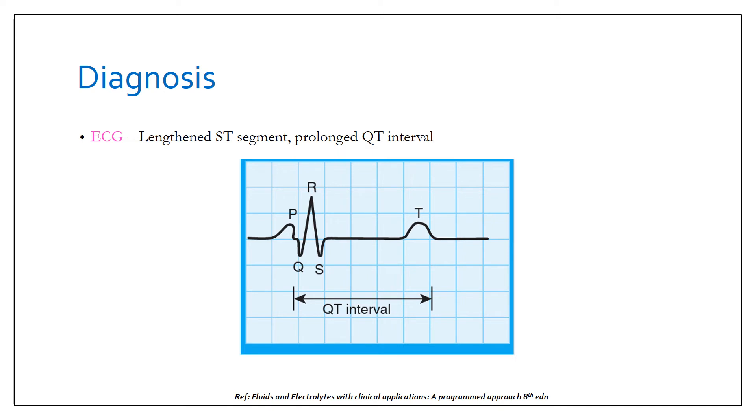On ECG you will find a lengthened ST segment and a prolonged QT interval. That is, the duration of ventricular depolarization and repolarization will be prolonged in patients with hypocalcemia.